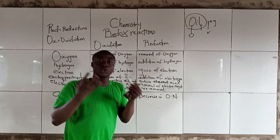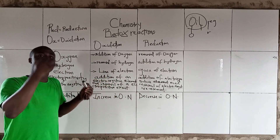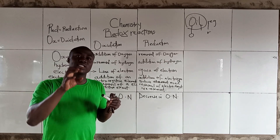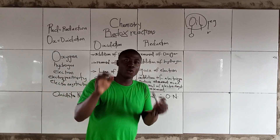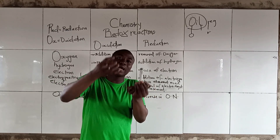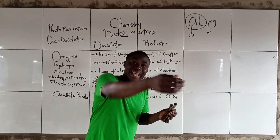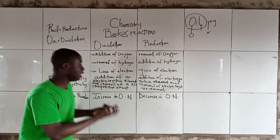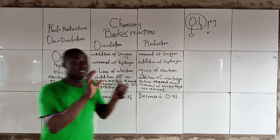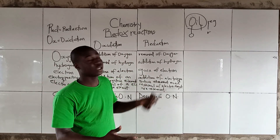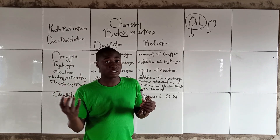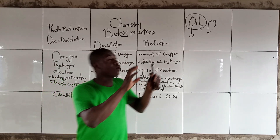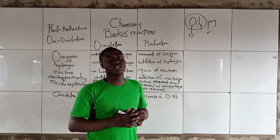How do we get the oxidation number? Oxidation number can be determined by some arbitrary rules. Oxidation number is simply an electrical charge in an element. The electrical charge in a particular element represents the oxidation number. It can be determined by some arbitrary rules, which I shall explain.